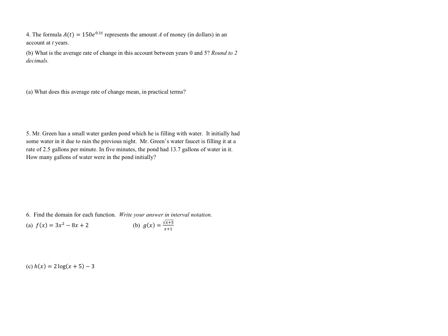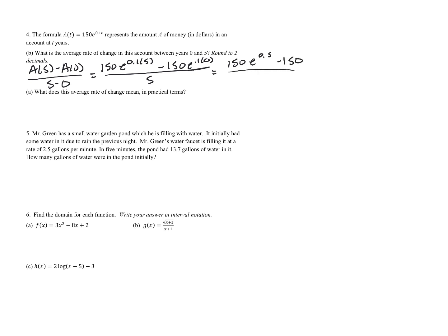Question four gives us a formula — the amount of money in dollars in an account after t years. We want to find the average rate of change between t equals 0 and t equals 5. So we compute A(5) minus A(0) over 5 minus 0. A(t) is 150 times e to the 0.1t, so A(5) is 150e to the 0.5, and A(0) gives e to the 0, which is 1, so that's just 150. This gives us (150e^0.5 minus 150) over 5, which rounds to approximately $19.46.